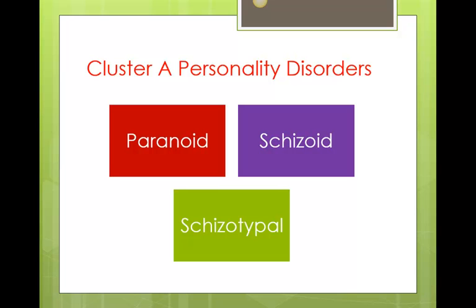Each of these characters I have posted on the Blackboard site, so you can go and watch the character and look for those traits specific to that personality disorder. In total there are nine personality disorders you're going to have to keep straight, and this association seems to work really well for students.